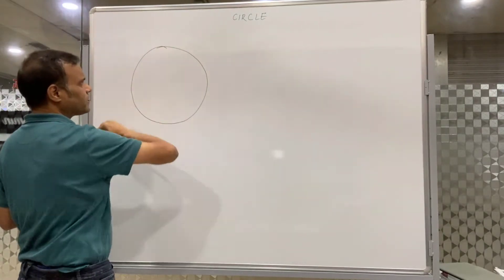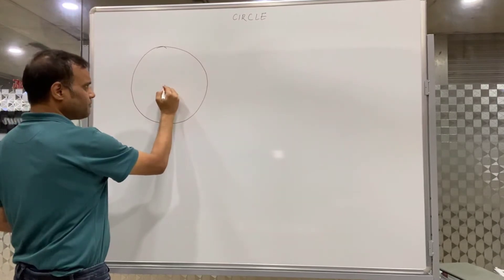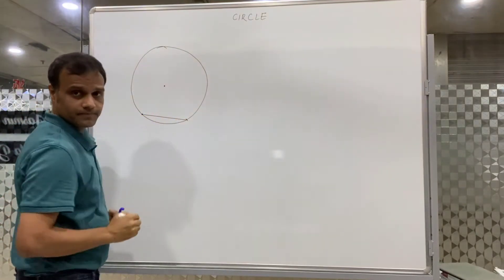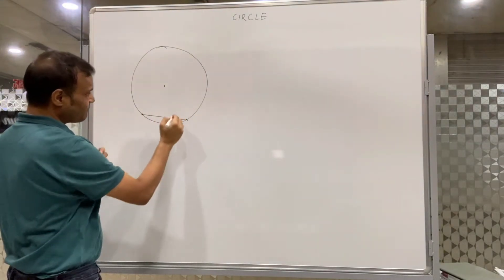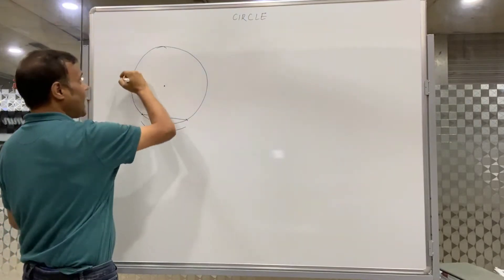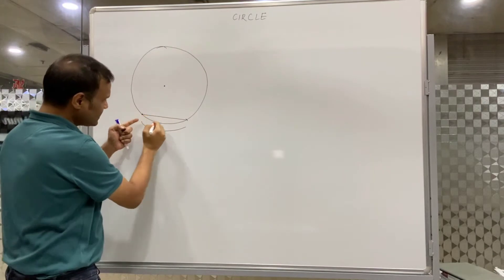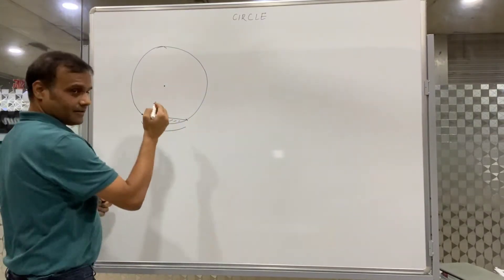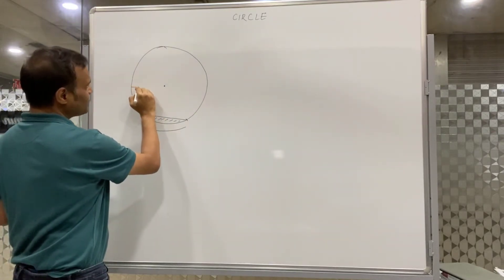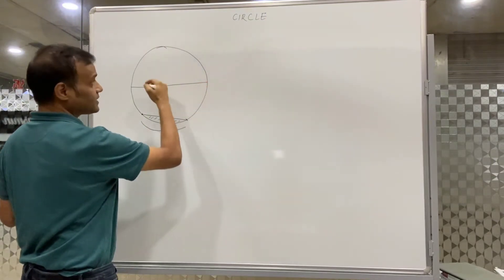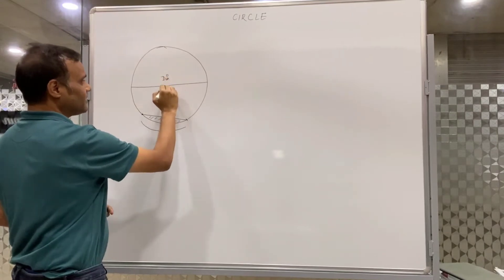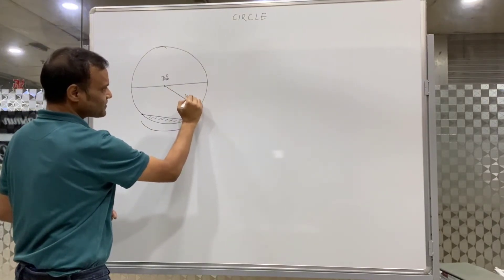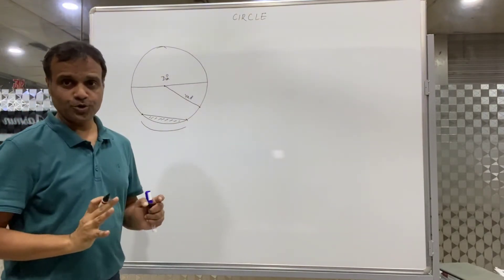A circle is simply a round figure. The point in the middle is the center. Any two points on the circumference joined together form a chord. This chord divides the circumference into two parts: the minor arc and the major arc. The chord with the circumference makes a minor segment and the remaining part is the major segment. The line passing through the center from one point to another on the circumference is called the diameter, and the line from the center to any point on the circumference is the radius.